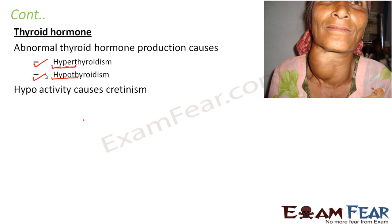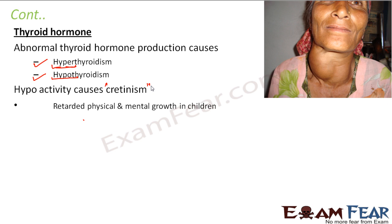Hypoactivity of the thyroid can cause a disease known as cretinism, which is retarded mental and physical growth in children. Generally in pregnant women, if there is hypoactivity of the thyroid hormone, the growth of the child is not proper — the child born may have retarded physical and mental growth. This is because the function of thyroid hormone is protein, carbohydrate, and fat metabolism and cellular oxidation. When the hormone is less, it affects metabolism, and therefore the overall physical and mental growth of the body.